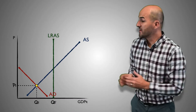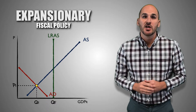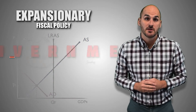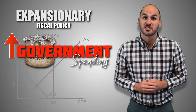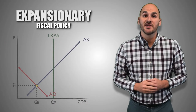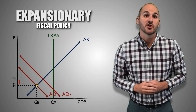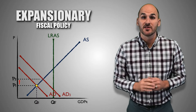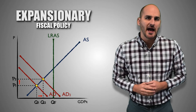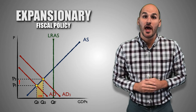When the economy is in a recessionary gap, the government will implement expansionary fiscal policy to stimulate aggregate demand. Government has two policy options: increase government spending or decrease personal taxes. When government increases its expenditures, government acts as a consumer and purchases goods and services in the domestic economy. The increase in government spending will increase aggregate demand, which causes a degree of short-run economic growth.